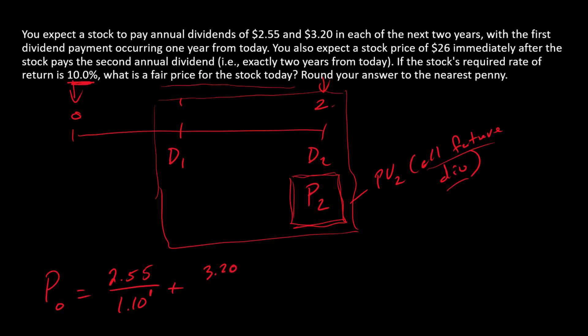So we're going to take 3.20, and since they're both happening at the same time, we can go ahead and add them together. So 3.20 plus this price here, and so that's $26. That's going to go into the numerator here as well. The denominator is one plus the discount rate raised to the second power because both of those are time two cash flows.